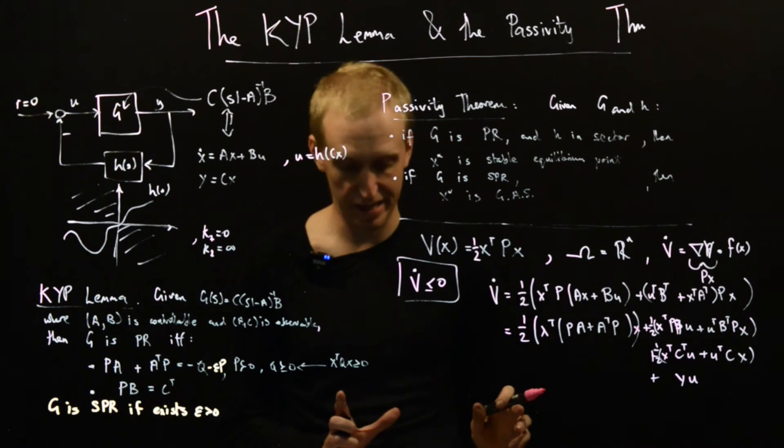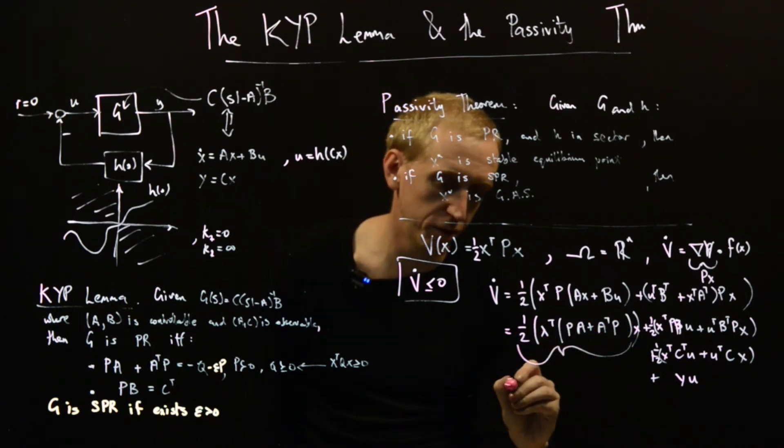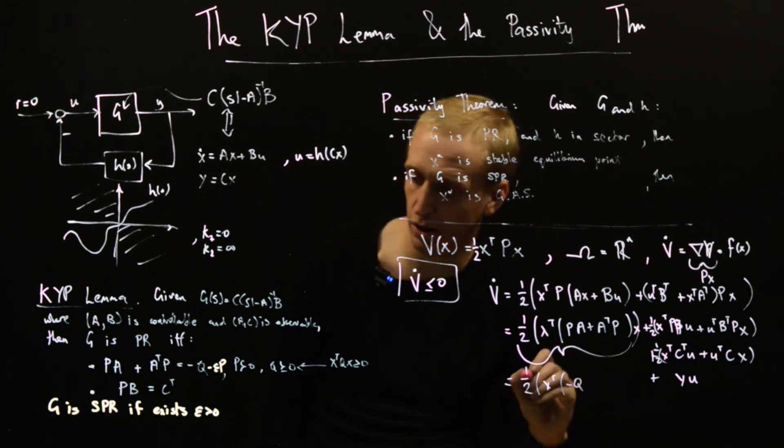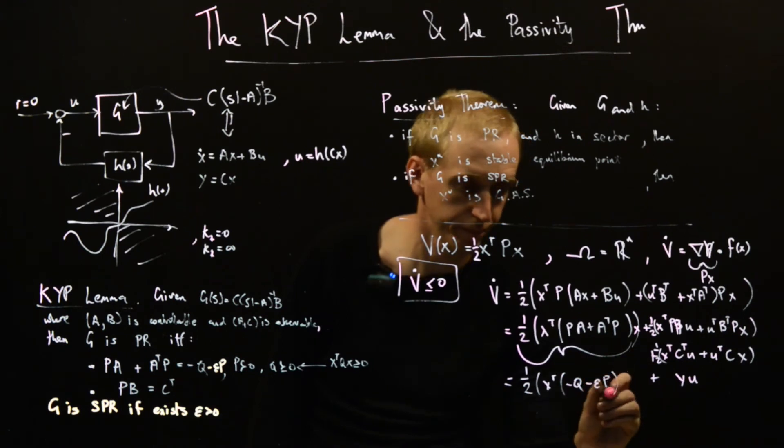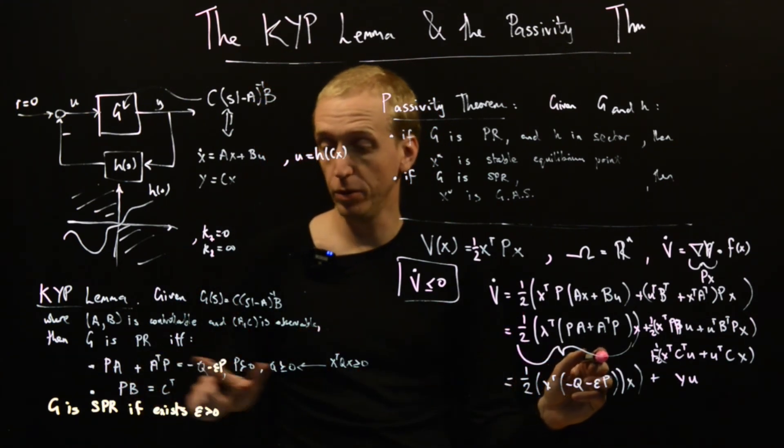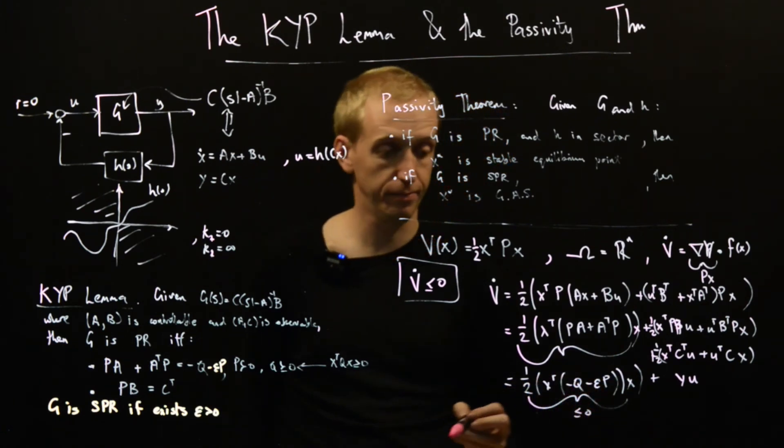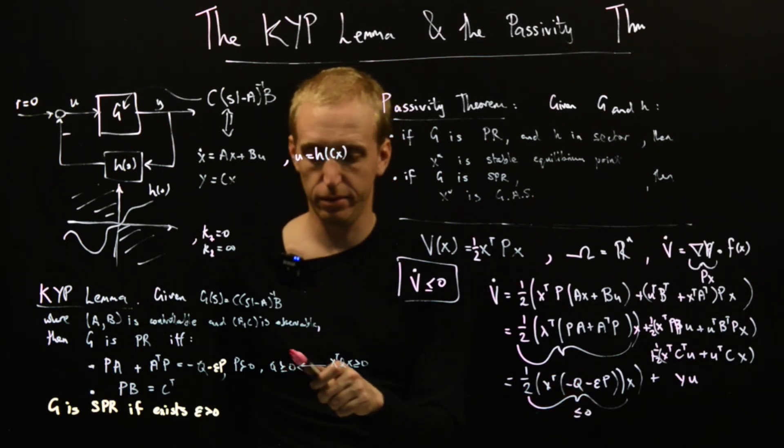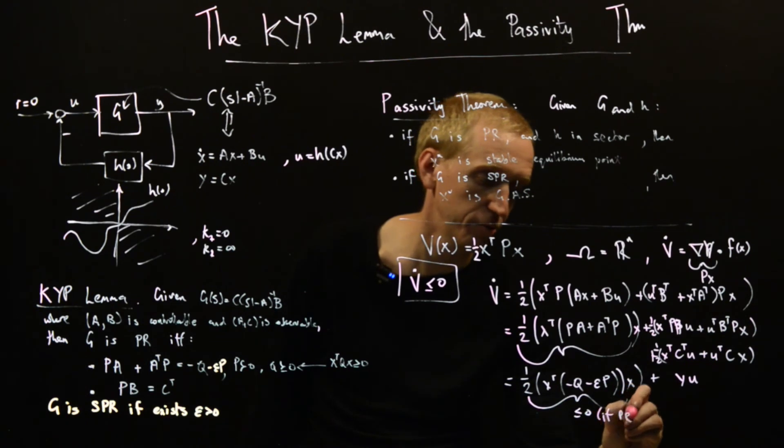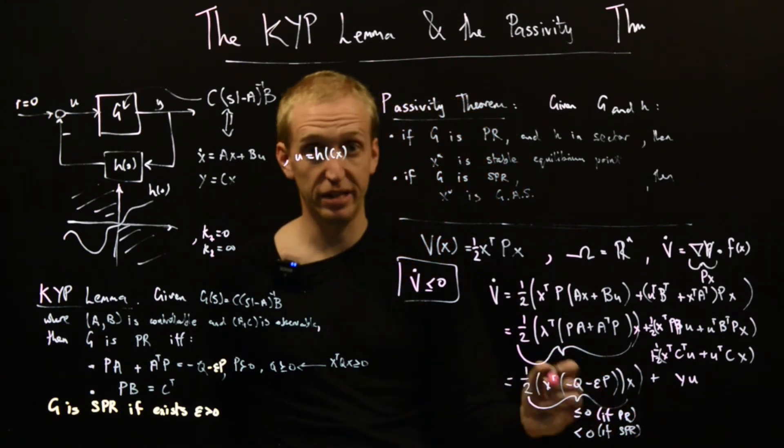Let's try to remember what we're trying to show here. This quantity here is equal to a half, and then x transpose, and we use this equation here and I get minus Q minus epsilon P x. What have we found? If we're positive real, then this epsilon would be zero, and so we've ensured that this thing here will be less than or equal to zero because this is semi-definite. We get this property, but there's a minus sign. So this whole thing is less than or equal to zero in the positive real case. And in the other case, it's less than zero if strictly positive real.